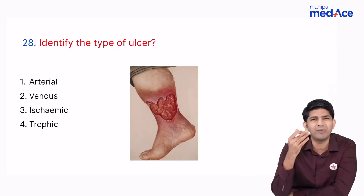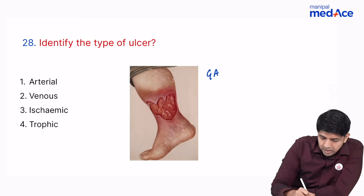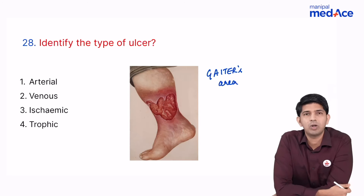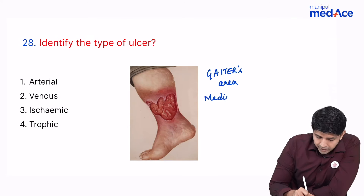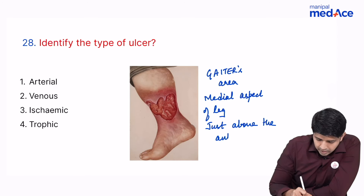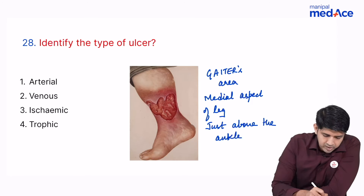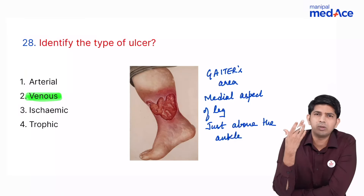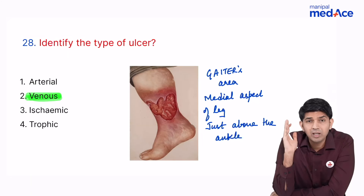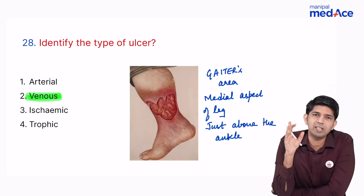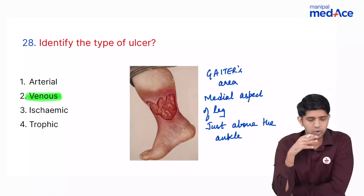An image showed an ulcer in the gaiters area — the medial aspect of the leg just above the medial malleolus. This is a venous ulcer. Straightforward — we have been learning this since our third-term surgical posting. If there is an ulcer in the gaiters area, it is a venous ulcer.